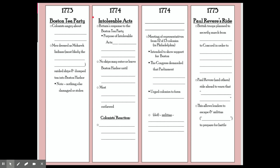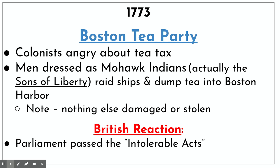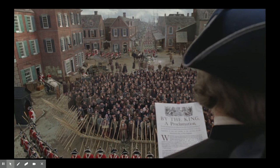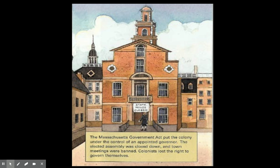The Intolerable Acts, also known as the Coercive Acts — this is a scene from John Adams showing the reading of the proclamation by the king. Basically, this was a series of laws designed to punish Boston and make an example of it. One major effect was shutting down local self-government: most town meetings were outlawed, the Massachusetts legislature was outlawed, and Boston was placed under full control of the royal governor and the military.